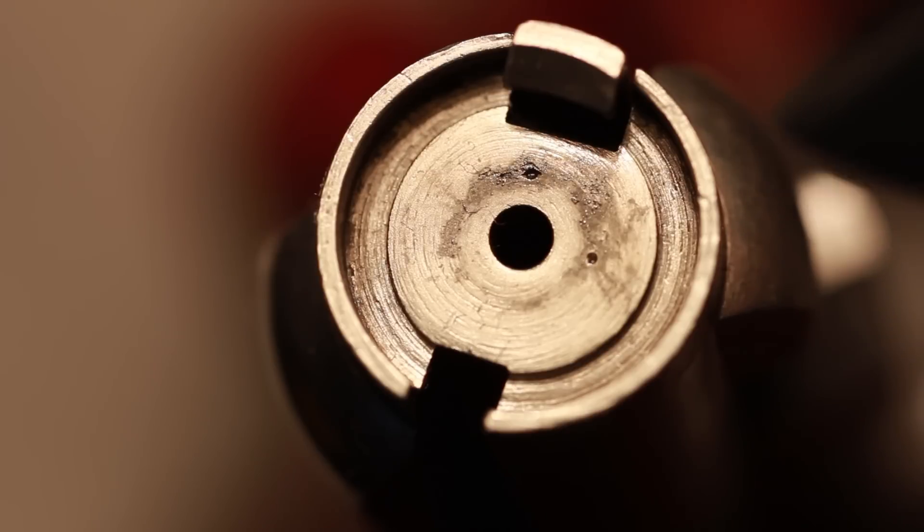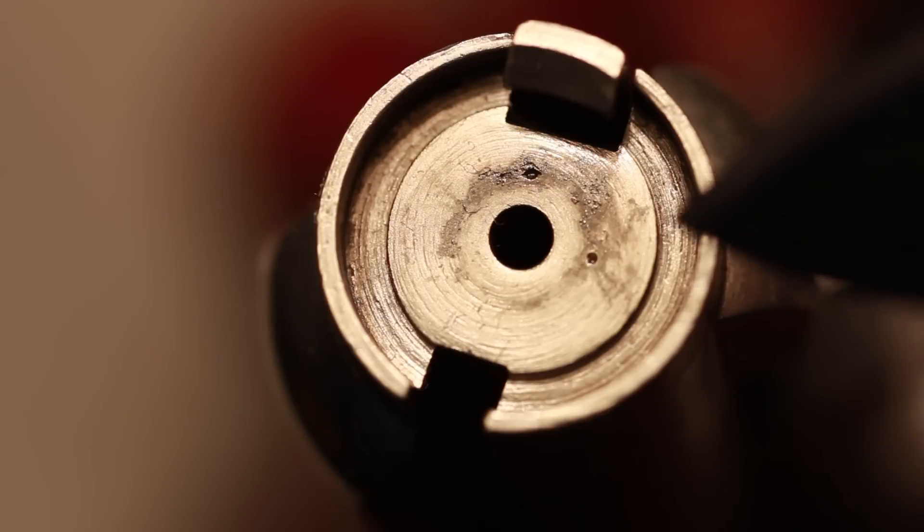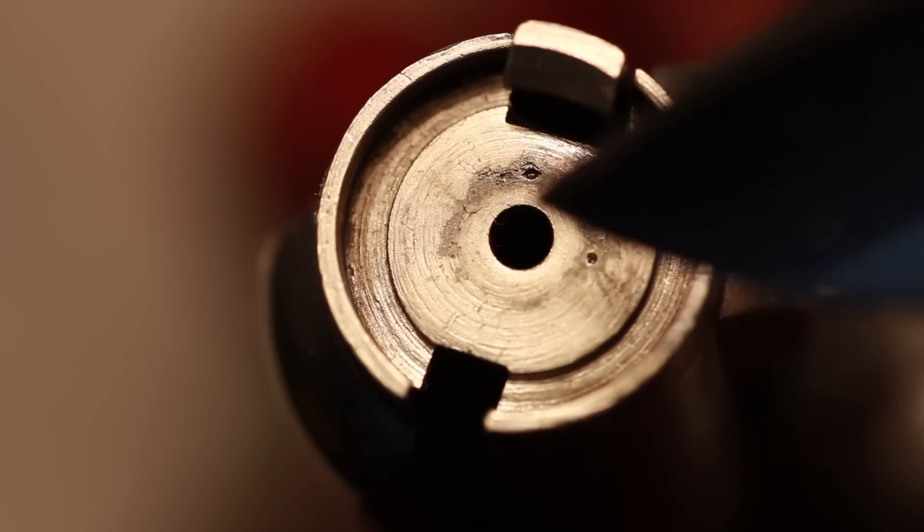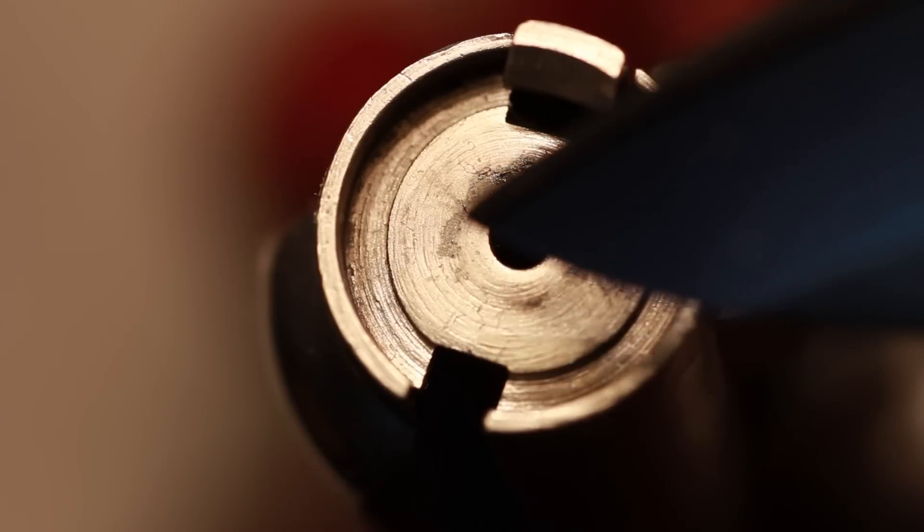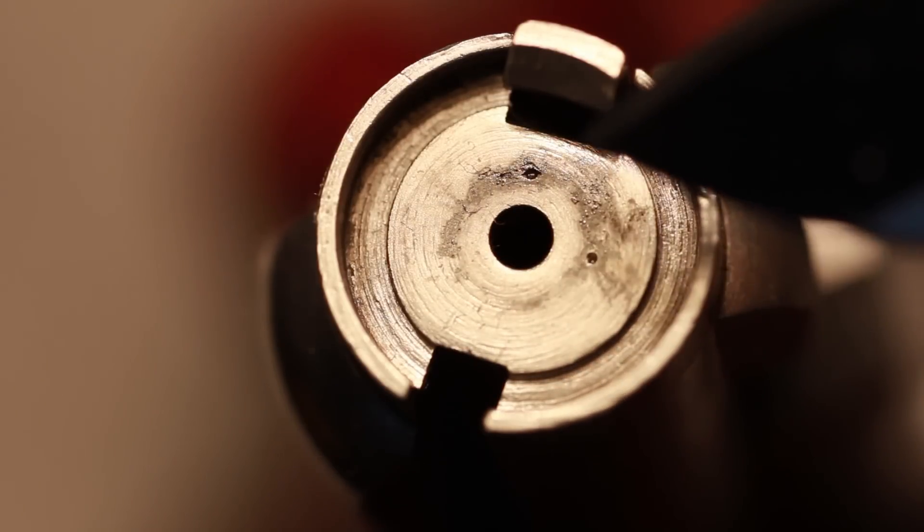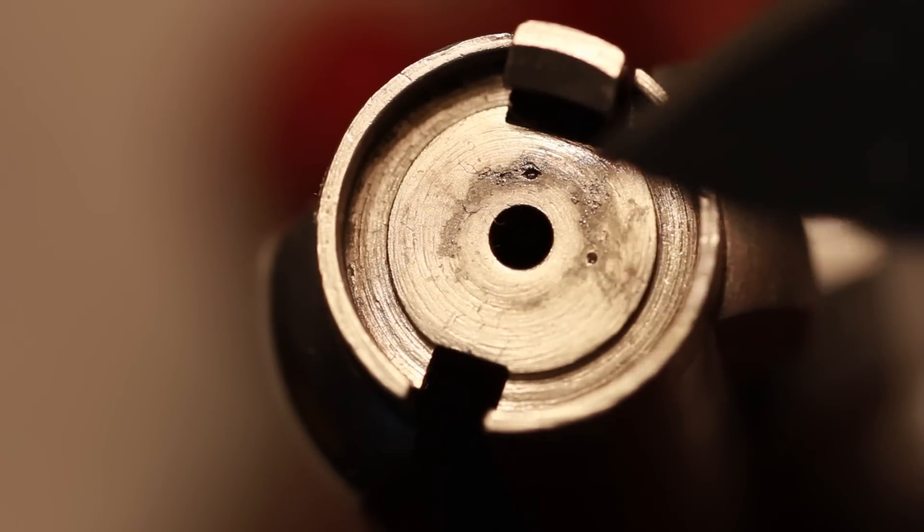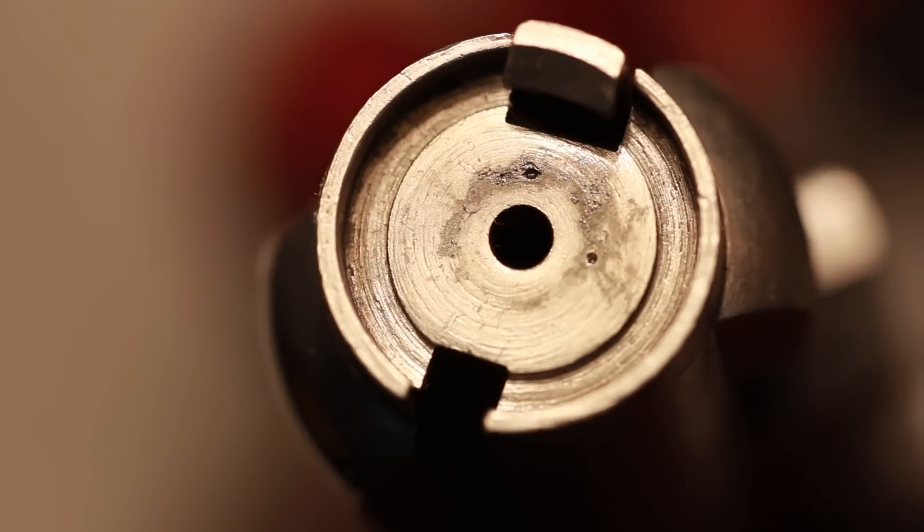So these salts have been sitting here for three or four months just on top of this steel here. You can definitely see a ring from where the firing pin, which is this hole in the middle, has protruded, come out, hit your primer, set off the primer, then set off your main charge inside your shell and then that's projected the bullet out.